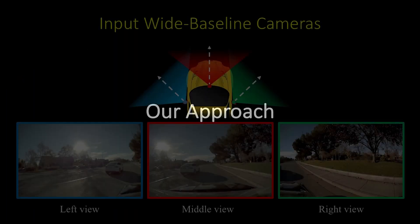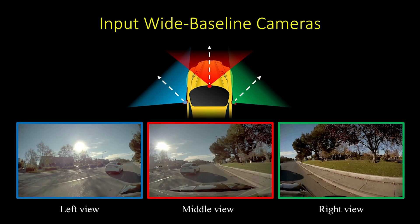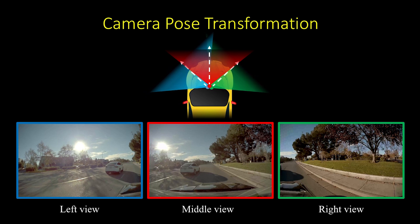We consider that the input cameras are mounted on a camera rig and are fixed during capturing. Given three input cameras, we first apply the camera pose transformation to warp the two side cameras to the same optical center as the middle camera.